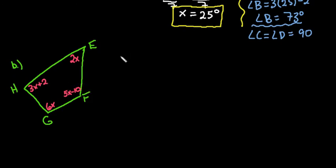Okay, so with this one, let's go ahead and set it up. We would say that 3x plus 2 plus 2x plus 6x plus 5x minus 10, all of this does have to add to give us 360 degrees.